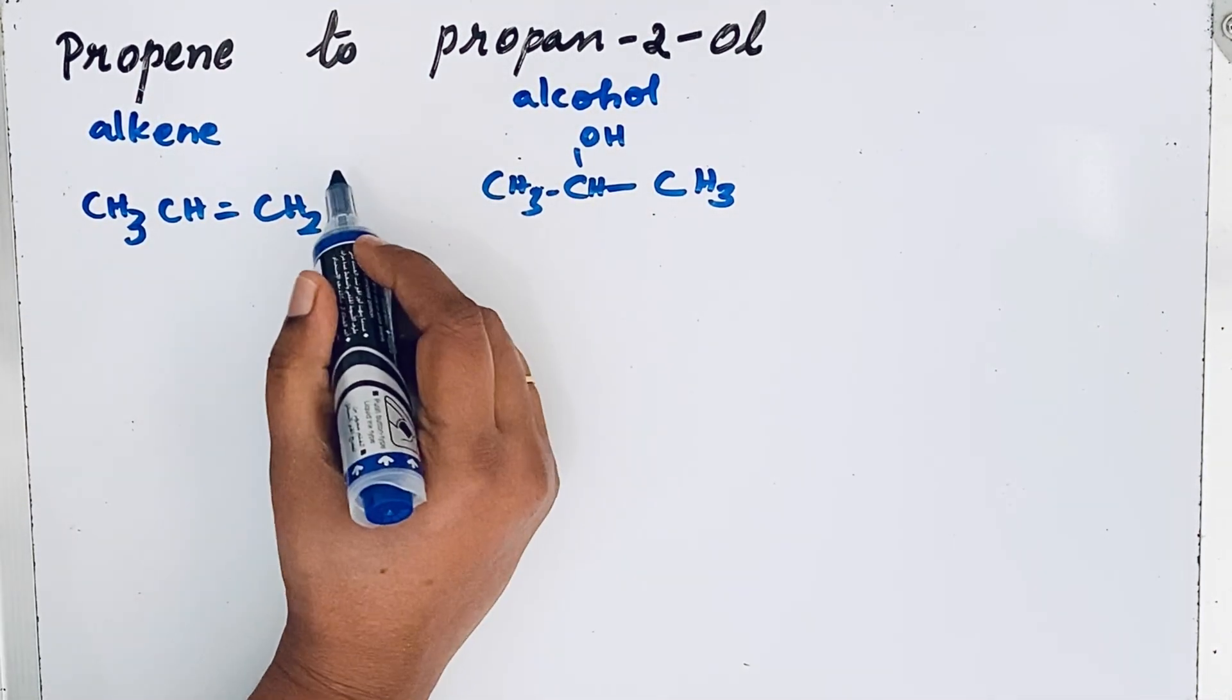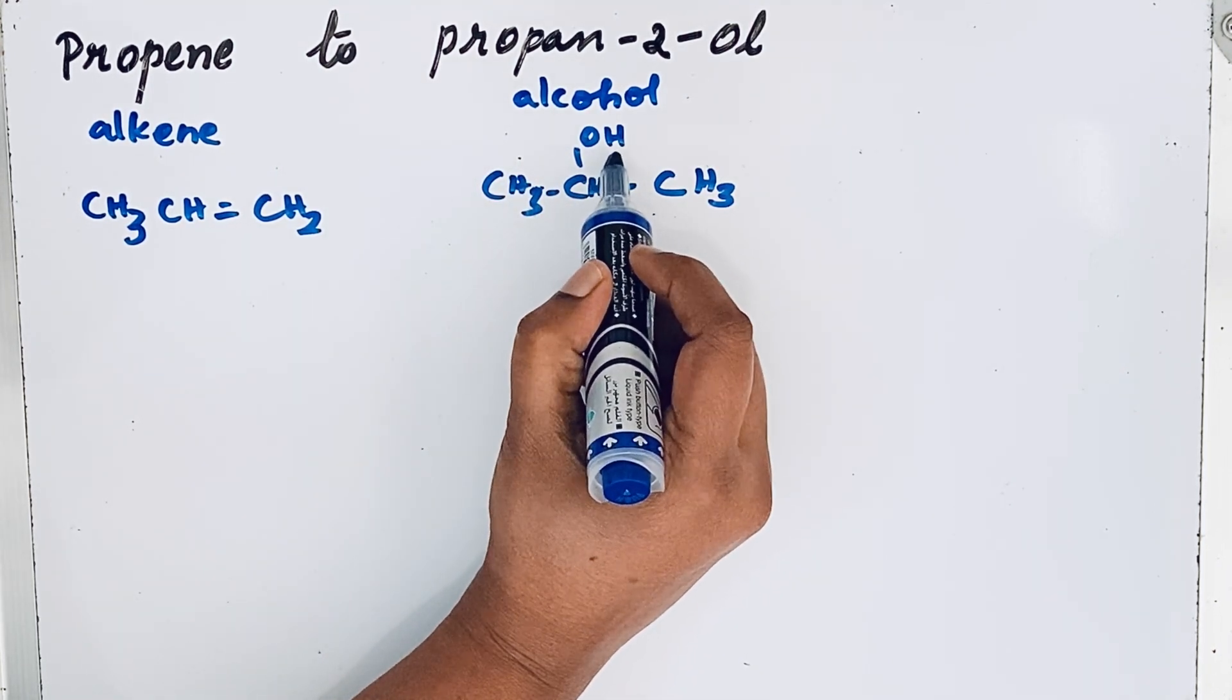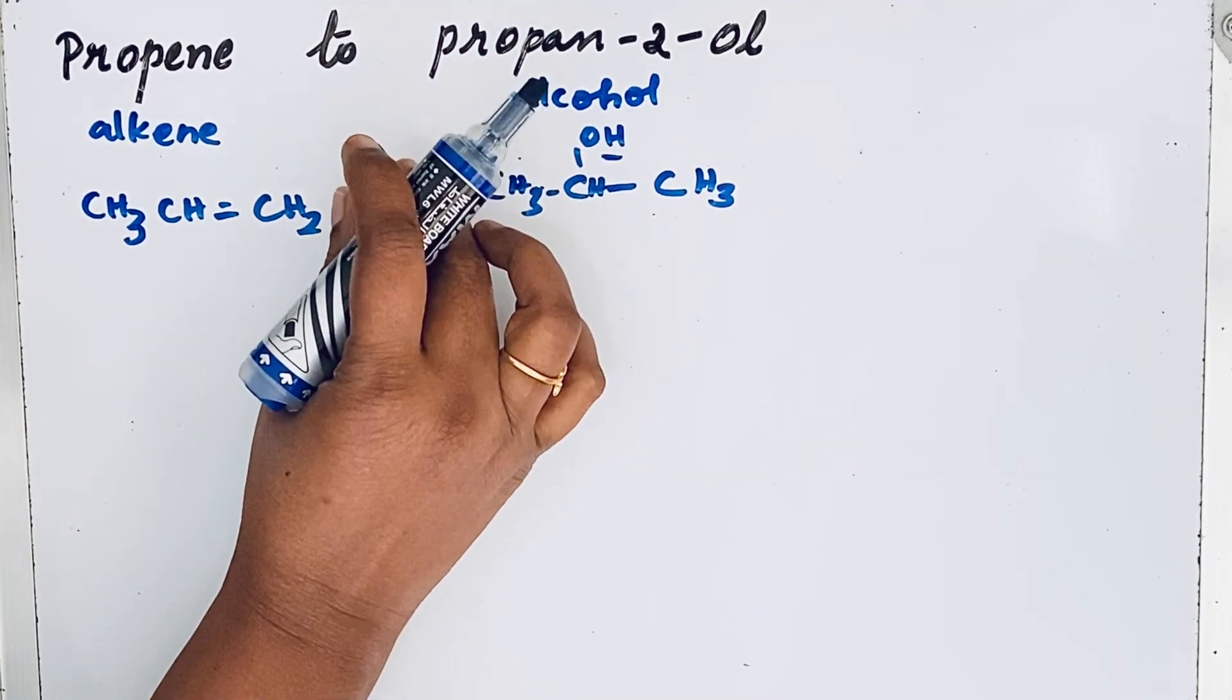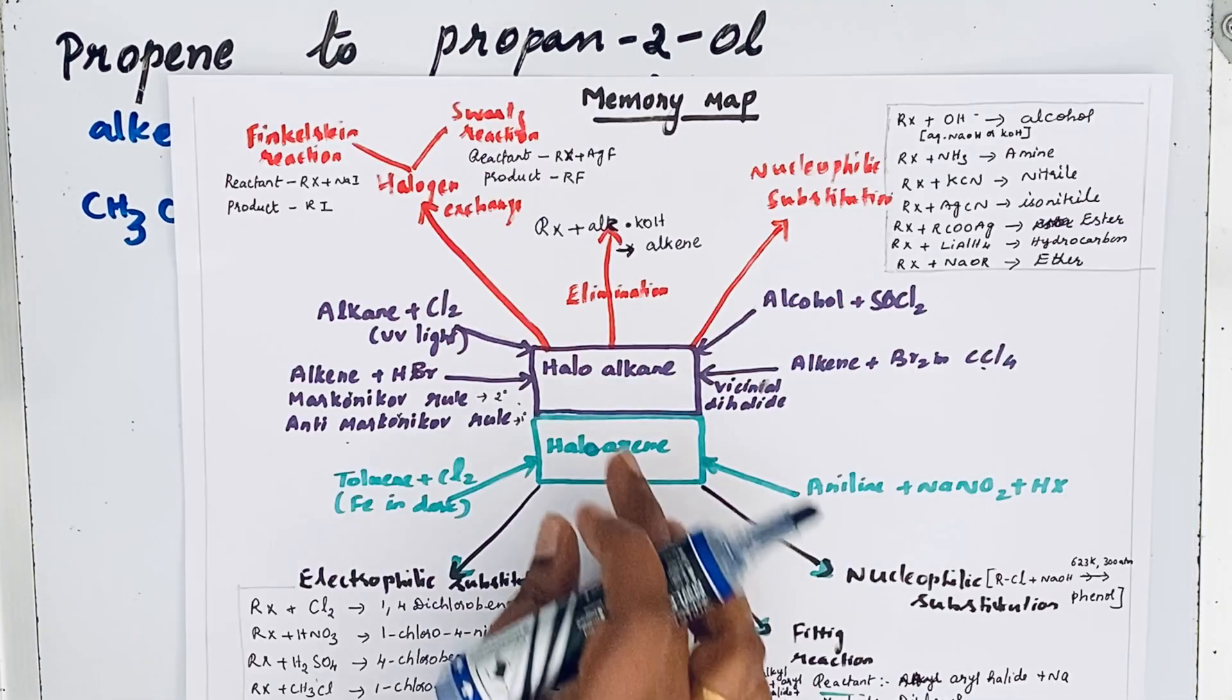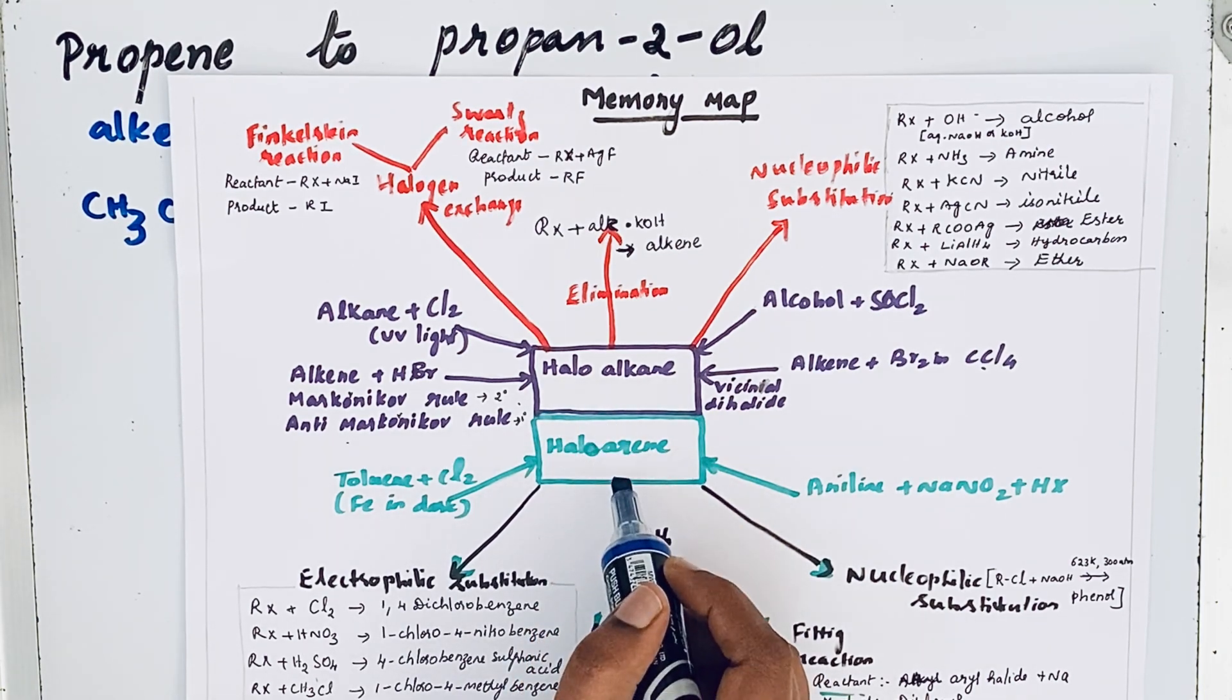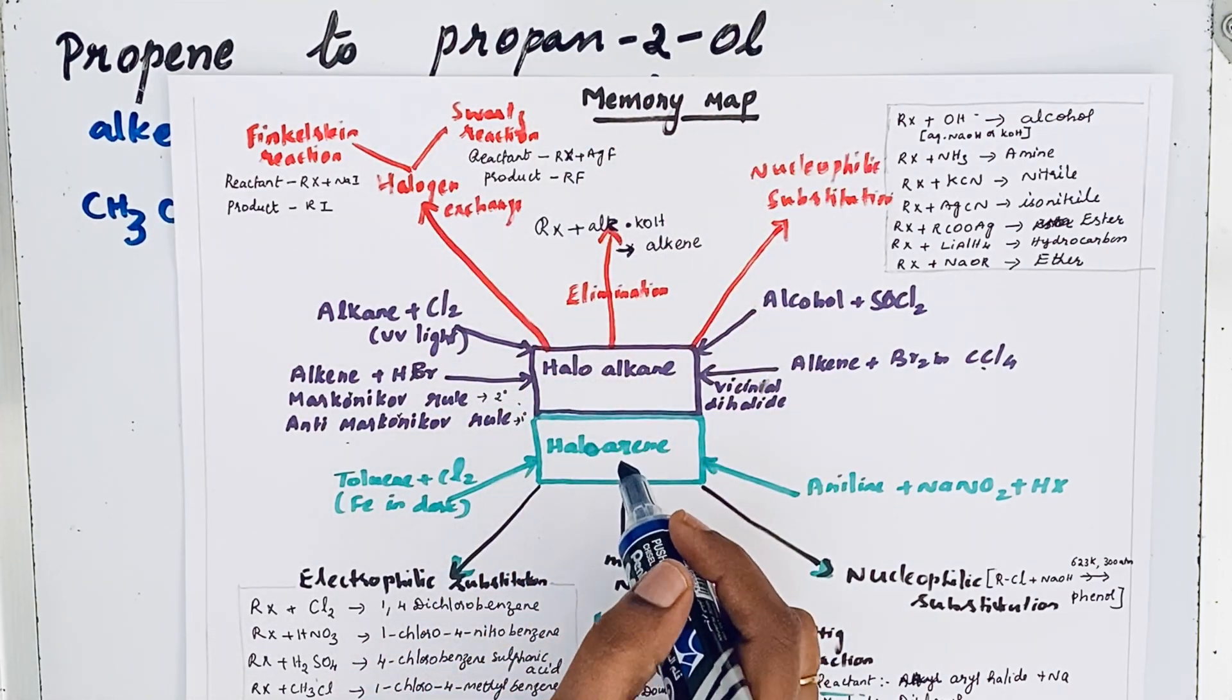CH3-CH=CH2. If you see here, there is a functional group in propan-2-ol, the OH group, which is a nucleophile. Since this is a nucleophile, we want the electrophilic compound, that is halo alkane or halo arene. Here you can see there are two divisions: halo alkane and halo arene. But propene and propan-2-ol both do not contain any cyclic compounds.